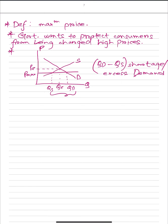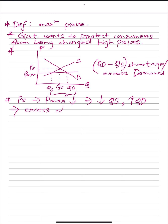Now explain the diagram. The price charged falls from PE to P-max. This leads to a decrease in quantity supplied and an increase in quantity demanded, because of which the market faces excess demand.